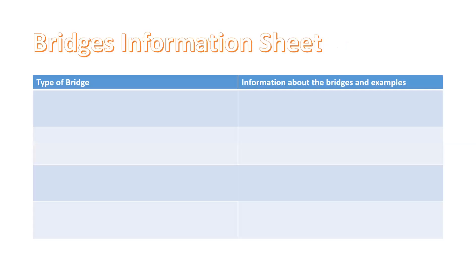If you haven't already, draw a chart. In the first column, place the type of bridge — you should know four names. In the next column, write information about the bridges and examples. Look back through the video to find information about all four types of bridges we've looked at today. Remember you can pause or rewind the video at any time to help you.